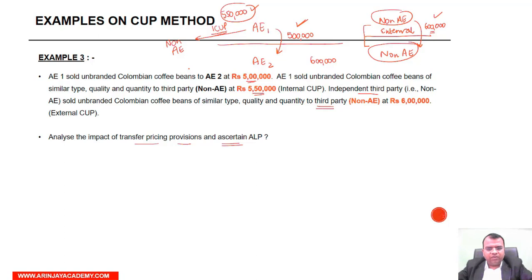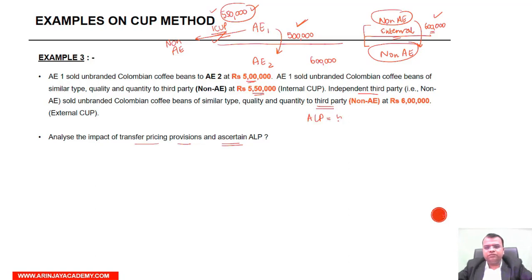If you remember, I explained to you that when both internal CUP and external CUP are available, which one is applicable? The internal CUP — which means the price in the internal CUP will be taken as the arm's length price. So your ALP will be rupees 5,50,000.